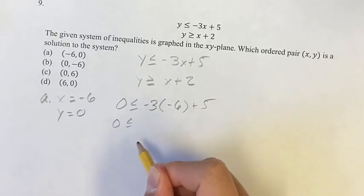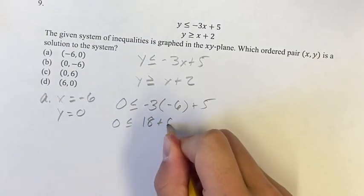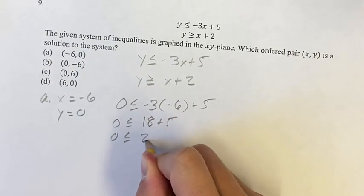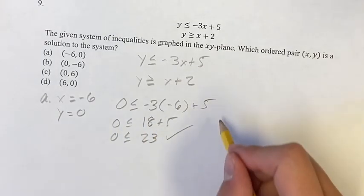So we have 0 is less than or equal to, negative 3 times negative 6 is 18 plus 5. We have 0 is less than or equal to 23. Now 0 is less than or equal to 23, so that's good. Now we check the other one.